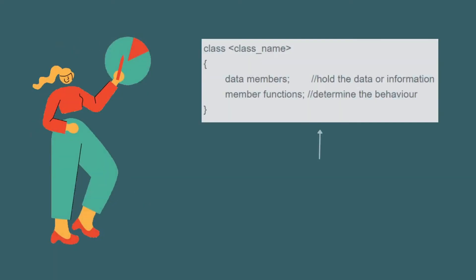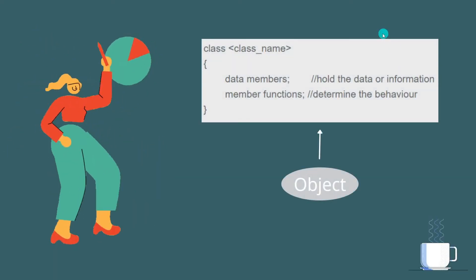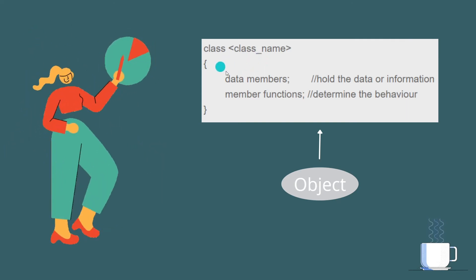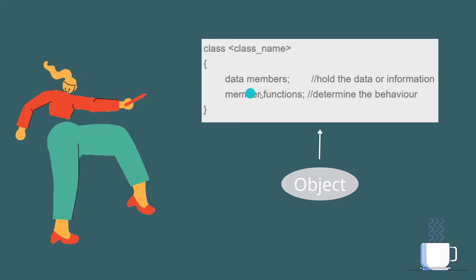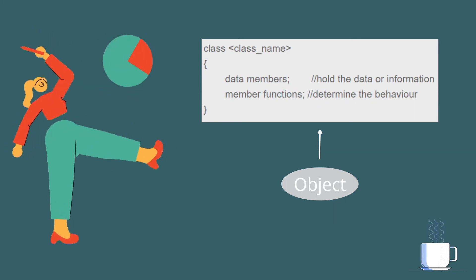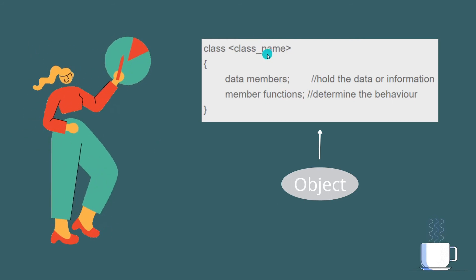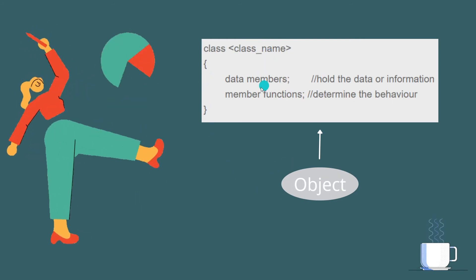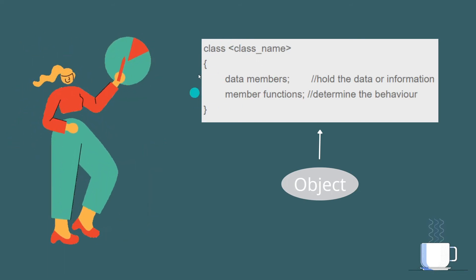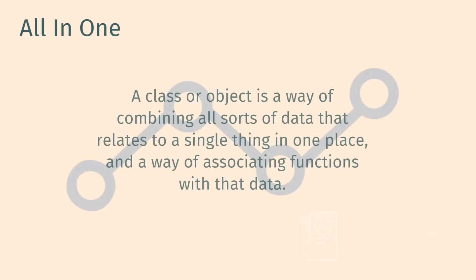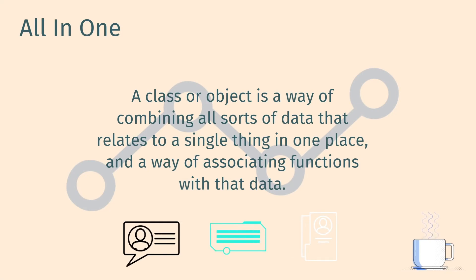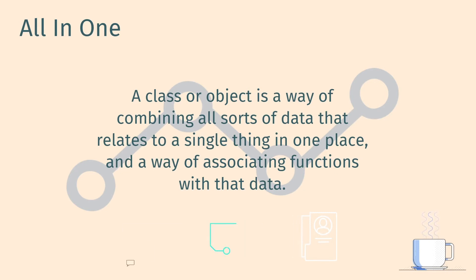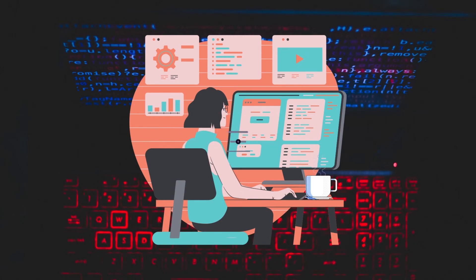Now let's see the syntax of a class. To create a class we need a class name, and then inside the class we can have attributes and define functions or methods. This is the basic structure of a class. Using an object we can access the attributes and functions associated with the class. A class or object is a way of combining all data related to one single thing in one place, along with a way of associating functions with that data.